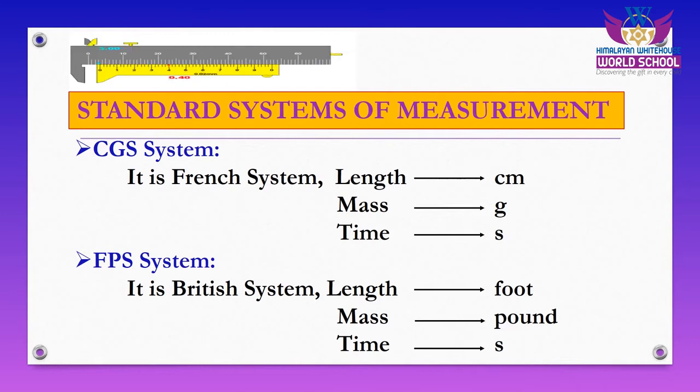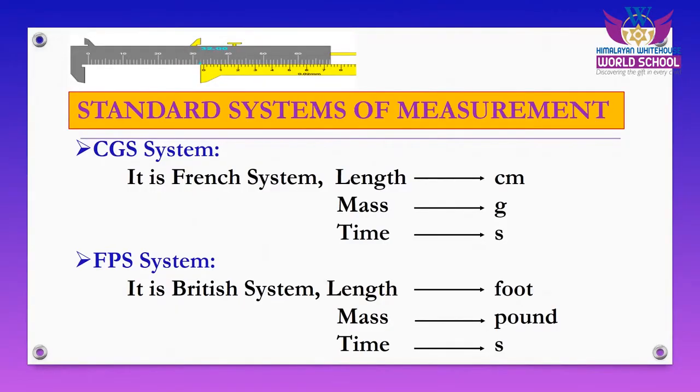We also have the FPS system — the British system of measurement. It also includes three quantities: length, mass, and time. In this system, foot is used for length, pound for mass, and second for time. For example, when we buy a cake, we buy it in pounds — so we are using the FPS, or British, system of measurement.